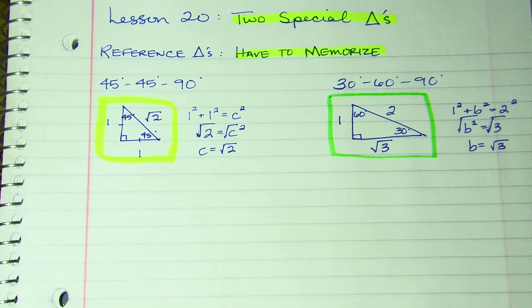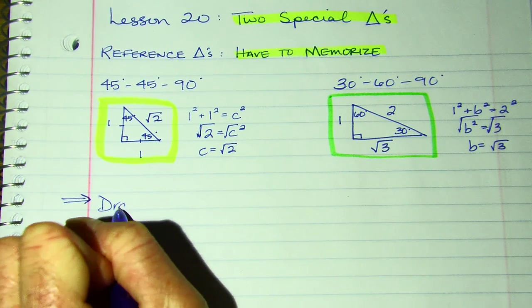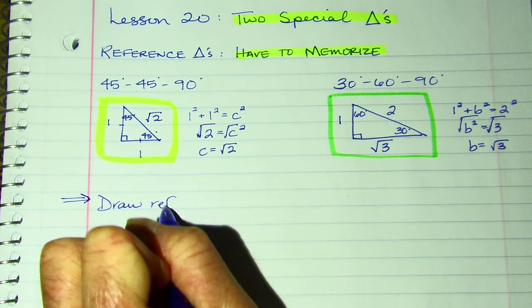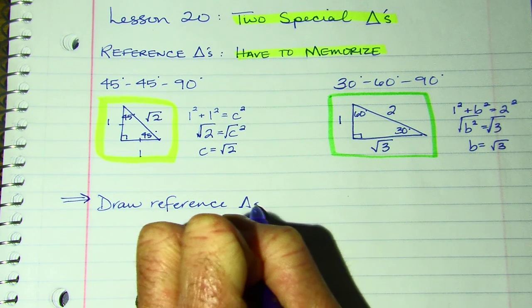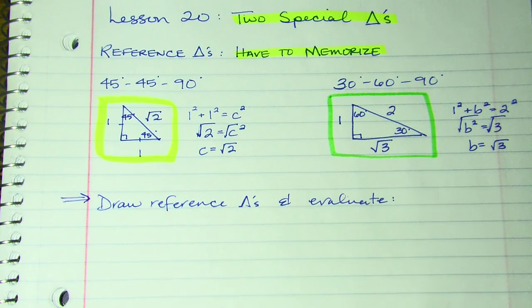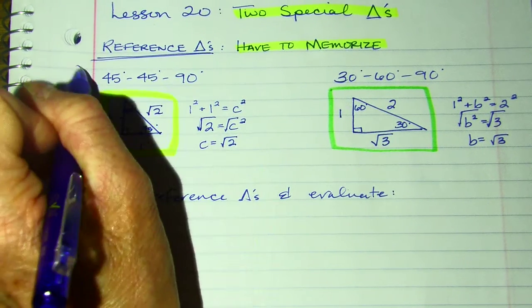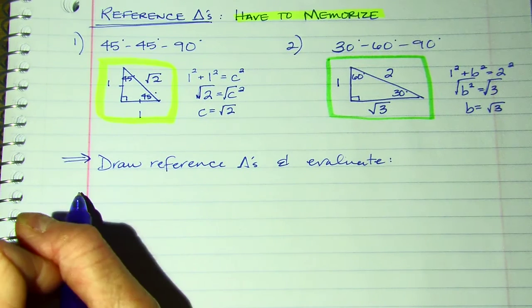So we are going to draw reference triangles. I don't want your answers in decimals. So we're going to draw our reference triangles and evaluate the following. And we're going to practice several. These are your reference triangles. You have two of them. Here's 1, here's 2. And you need to memorize both. So I'm going to do several examples with you.